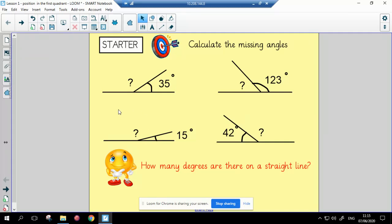Good morning, Year 5, and welcome back to Maths for this week. We are starting a new topic on position and direction, but before we begin, I'd like you to try this starter activity where you need to calculate the missing angles. To be able to do this, you need to think carefully about how many degrees there are on a straight line. When you're ready, move on to the next slide, and I'll show you the answers.